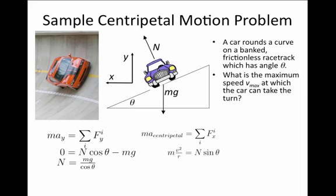In the x direction, we know that the value for the magnitude of centripetal acceleration is v squared over r, and therefore the centripetal force has to be equal to mv squared over r. So where do we get that mv squared over r from? Well, there's only one force that points in the x direction, and that's a component of the normal force, N times sine theta.